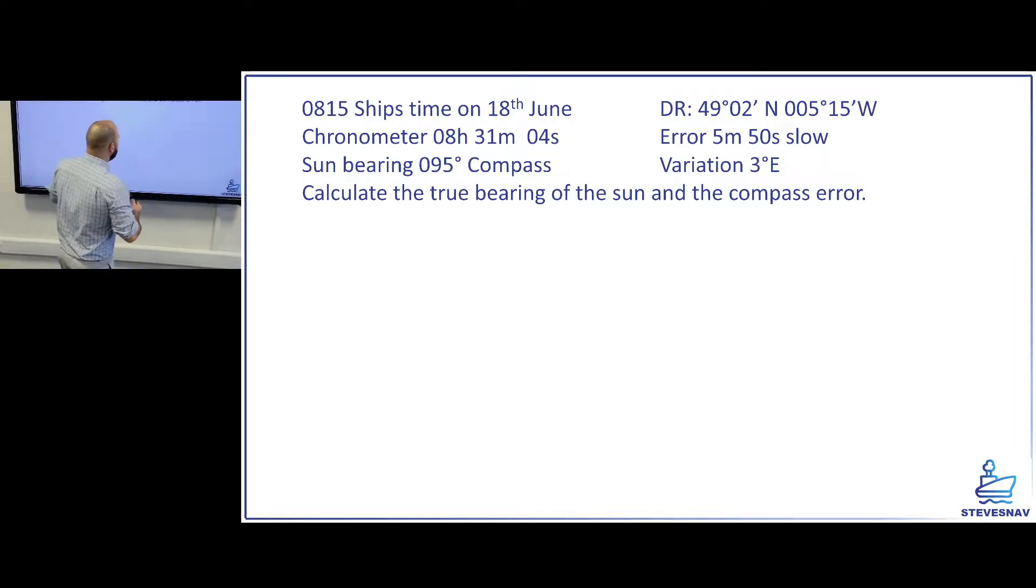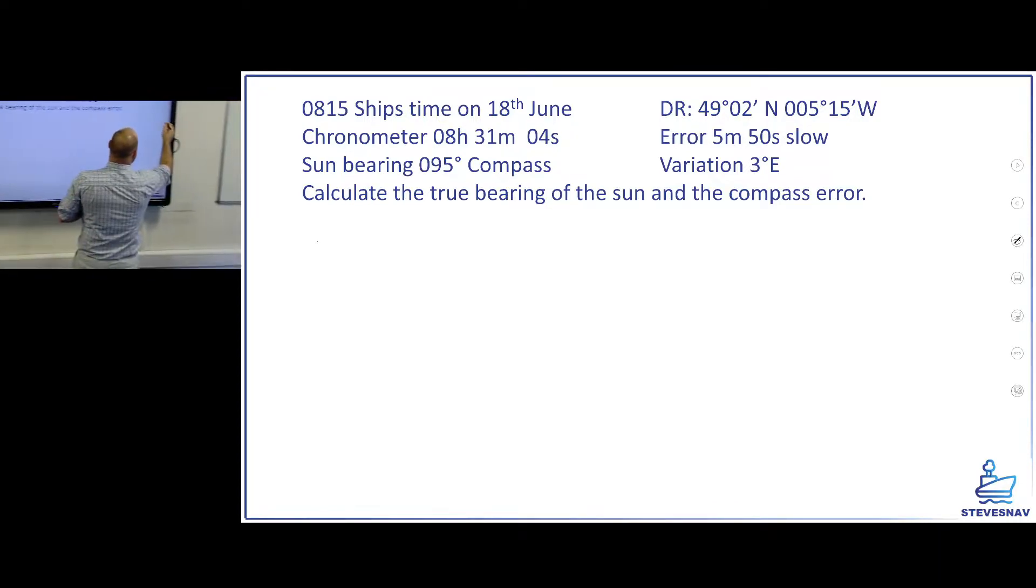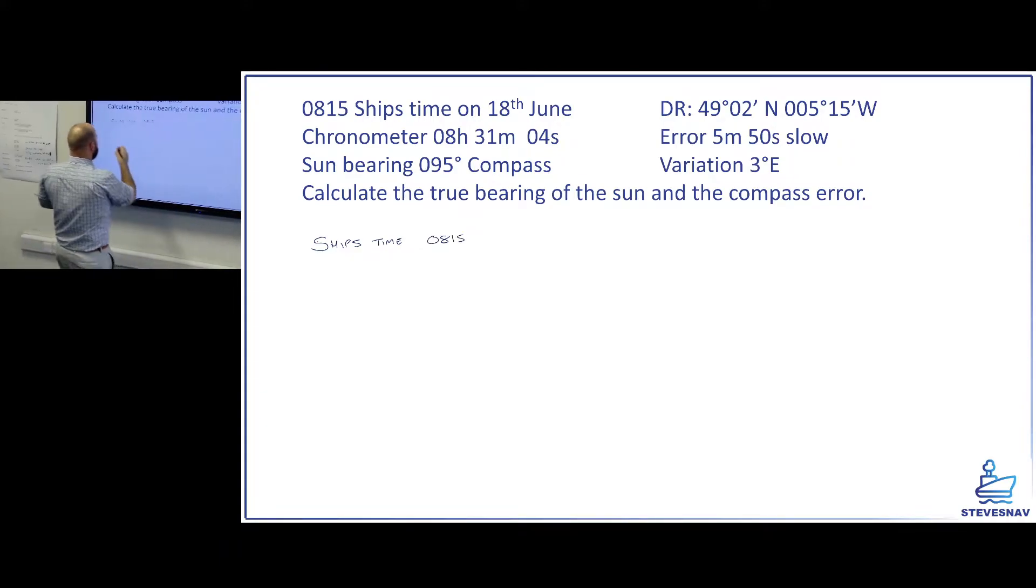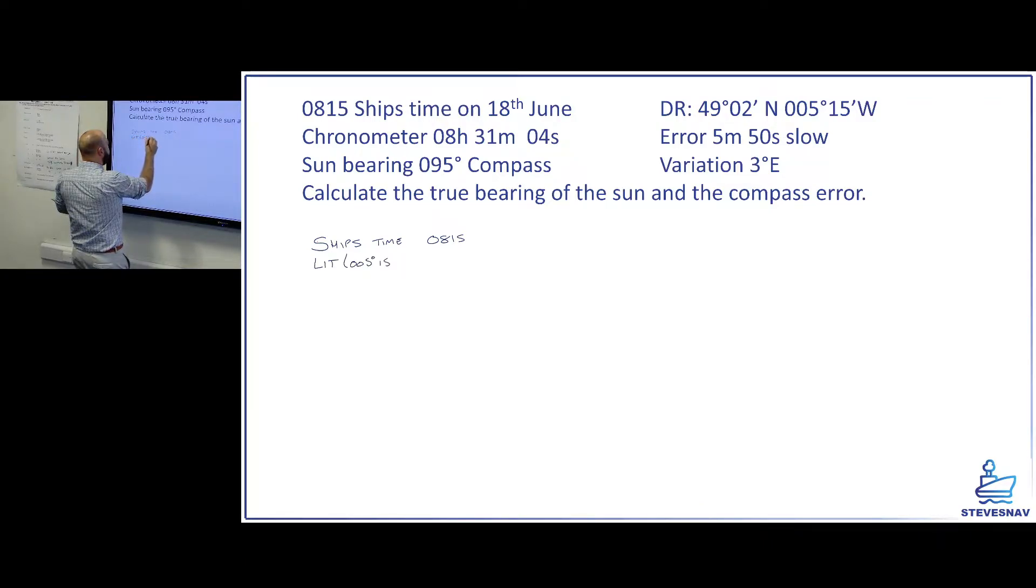So we're going to have to start by getting a UT time. The chronometer says 08:31. Chronometers are just 12 on a clock like a watch. We don't know if it's AM or PM. Depending where we are in the world it could be either. If you're in the Far East it's going to be a very different UT time if you're in the UK at the same time. So the ship's time in this case was 08:15. So what we're going to do is we're going to start with a ship's time of 08:15.